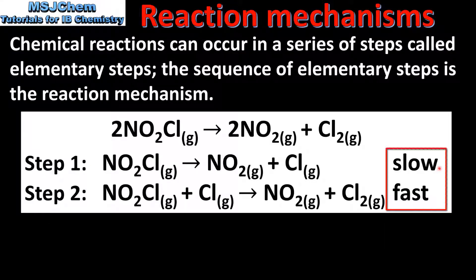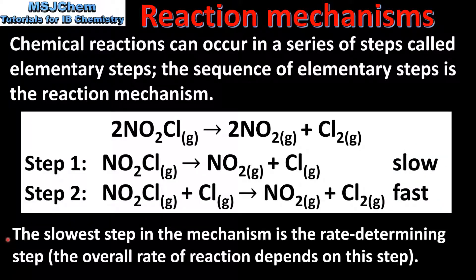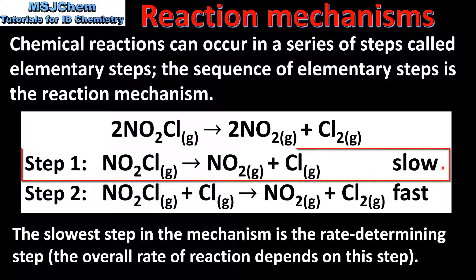We can also see that step 1 is labelled as slow and step 2 as fast. The slower step in the reaction mechanism is the rate-determining step. The overall rate of reaction depends on this step. So in this reaction mechanism, step 1 is the rate-determining step, and the overall rate of the reaction depends on this step only.